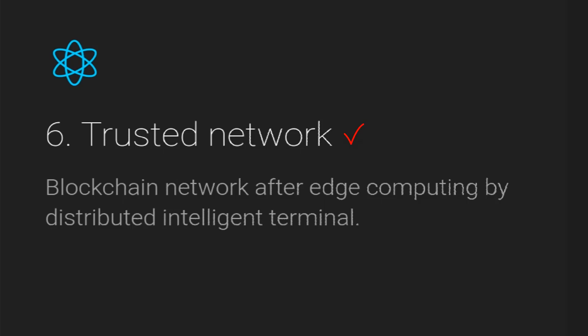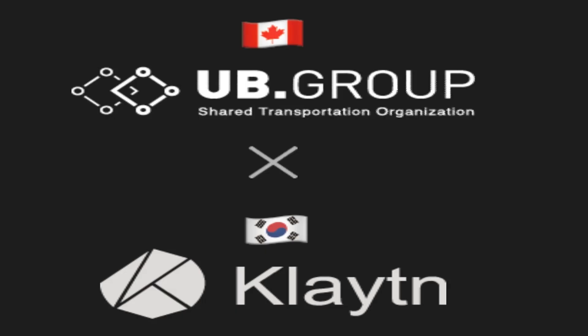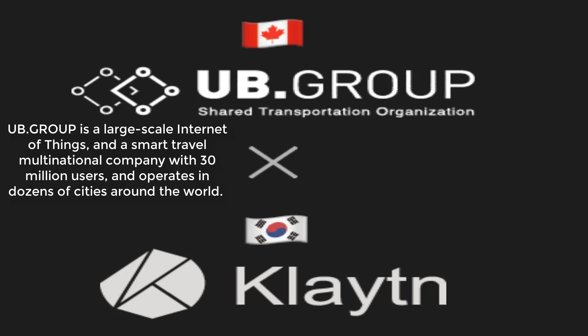Hawk Network also offers a trusted network. It is built on the blockchain, offers smart contract services, and runs nodes easily. Hawk Network is connected to provide a trusted network through its edge computing and distributed intelligent terminal.